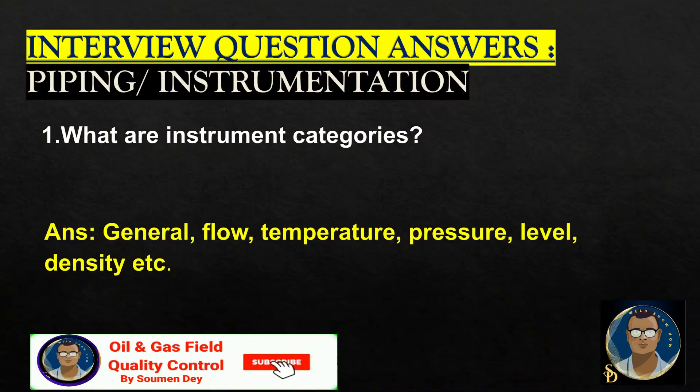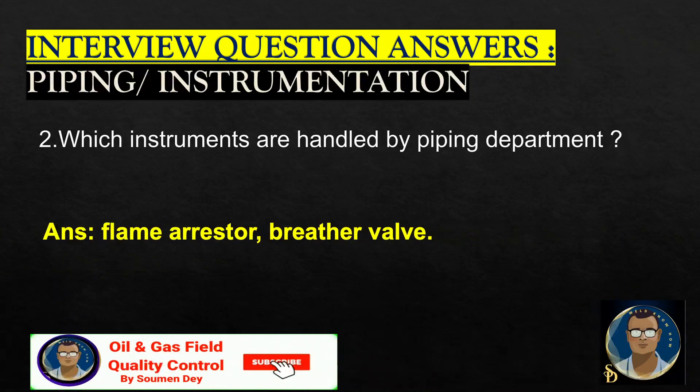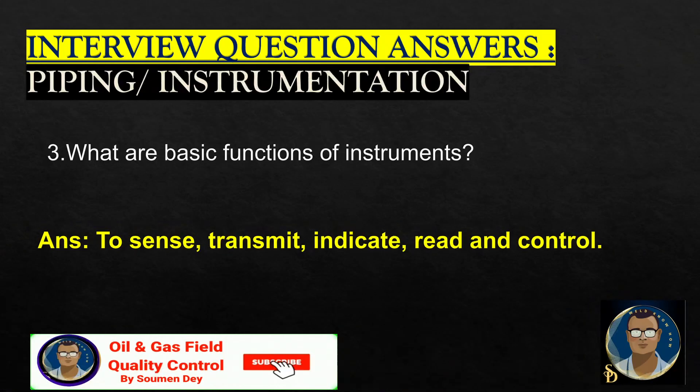Let us start. What are the instrument categories? General: flow, temperature, pressure, level, and density — there are more also, but this answer will be sufficient. Which instruments are handled by the piping department? Flame arrestor, breather valve, etc.